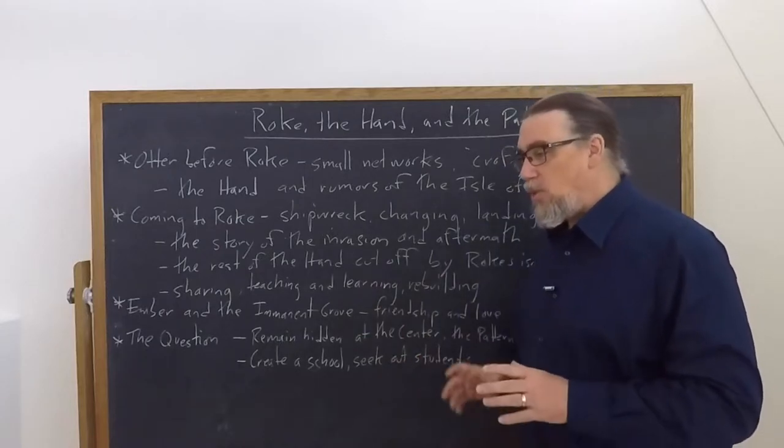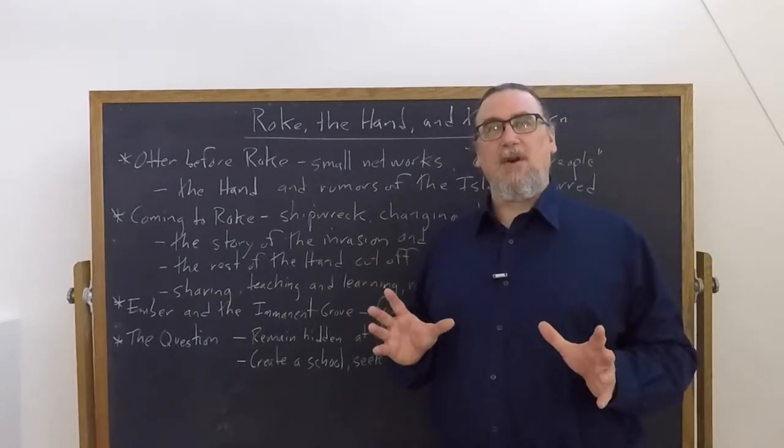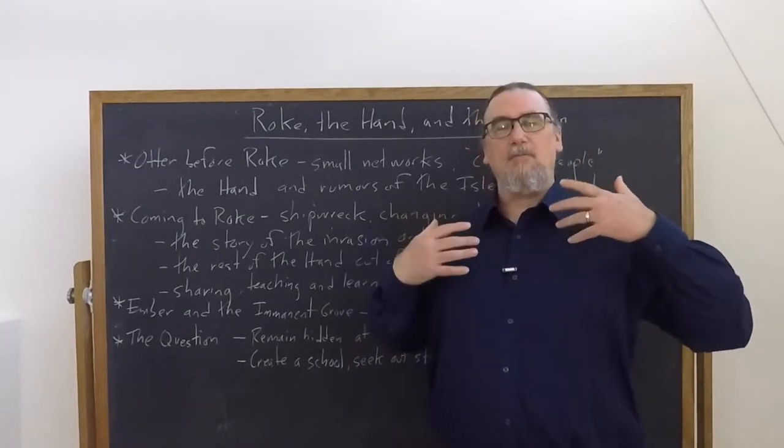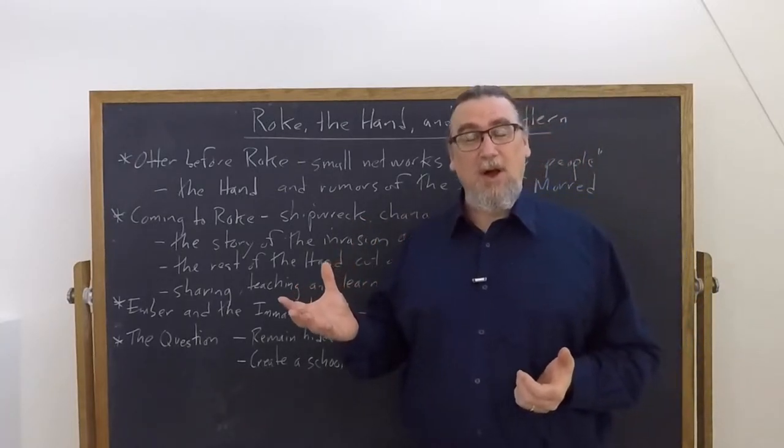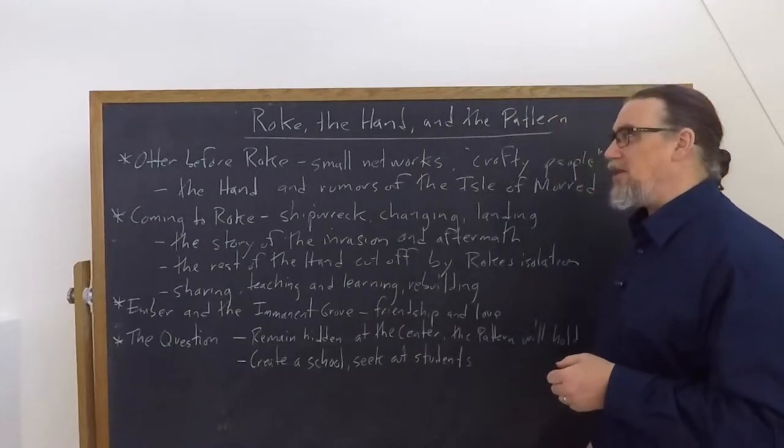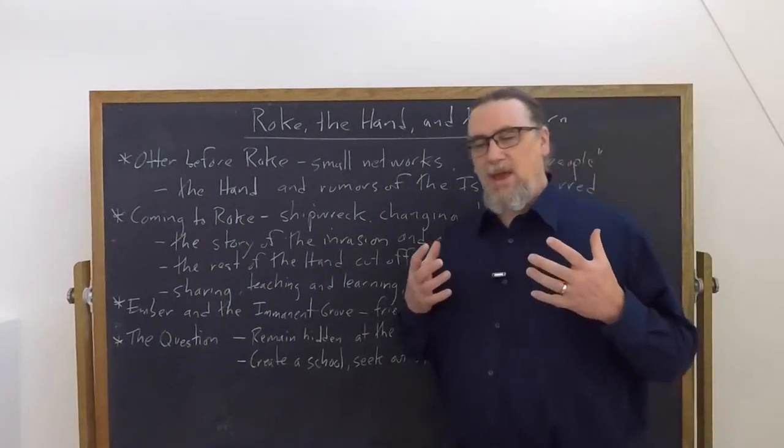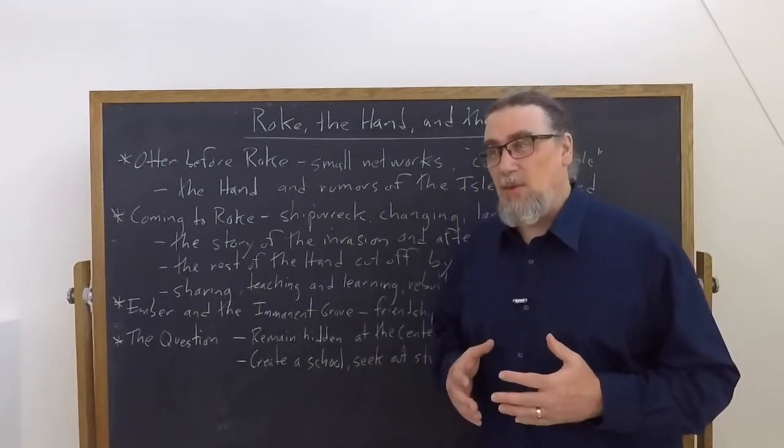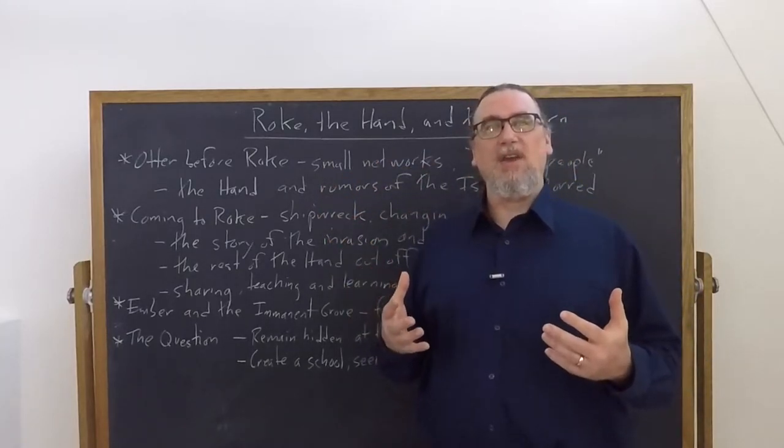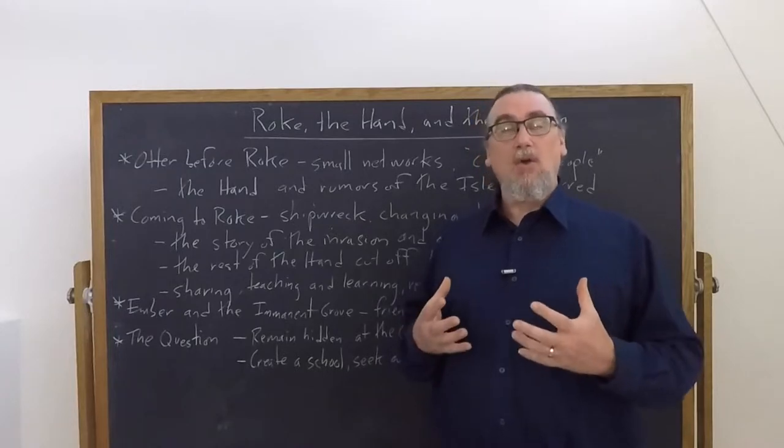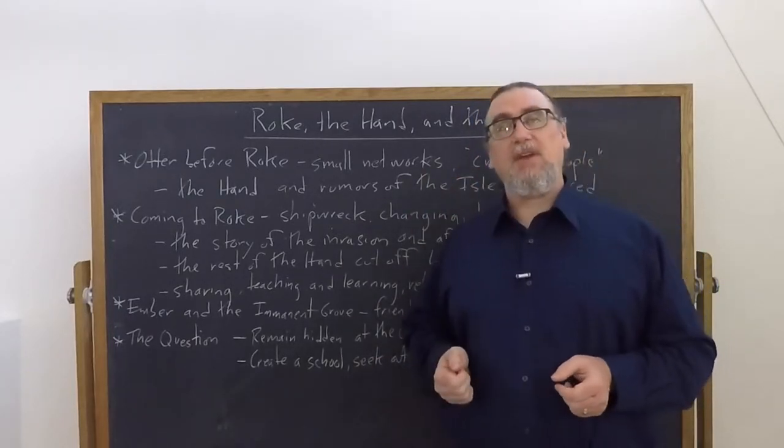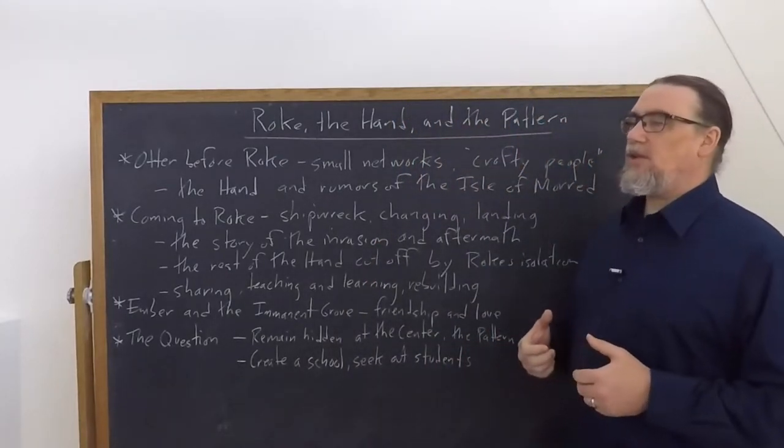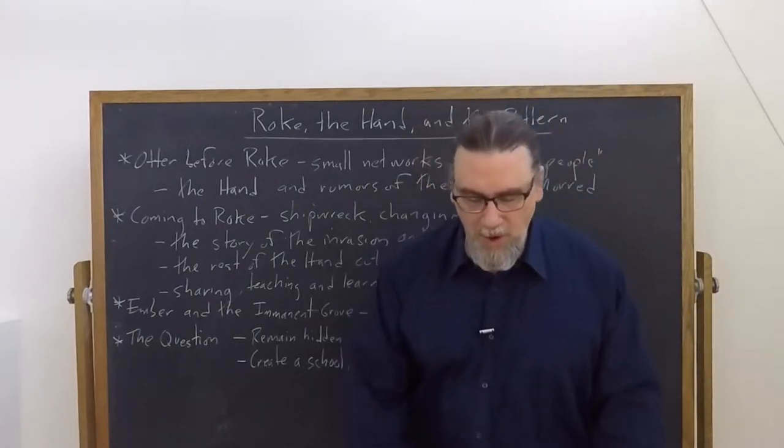All of this happens largely through the eyes of Medra or Otter. Later on, he'll be called Tern and he goes by other names as well in different places. We get gradually introduced to Roke in part by seeing the reflections of what we could call the actions and plans early on of Roke manifested in the hand. Before that, we get to see that Otter runs into things that are kind of like the hand, but not quite the same.